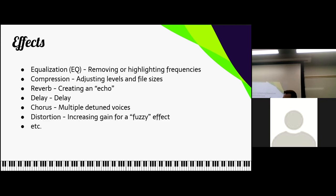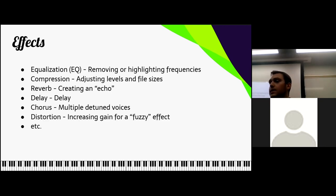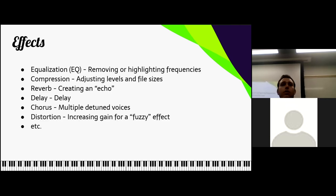Reverb — we also talked about this briefly. Reverb is the echo of the sound — sound waves bouncing off walls and coming back. We're actually in a soundproofed room right now, so there isn't much reverb here. In a normal room, depending on the room size and loudness of the sound, you get different types of reverb. If you're in a huge concert hall, there's going to be a ton of reverb. If you're in a tiny room, you play a sound and there's not going to be much reverb — it's just a dry sound.